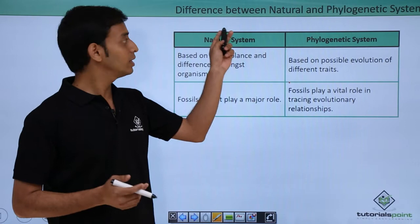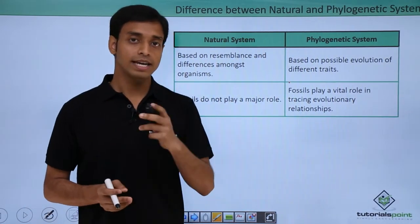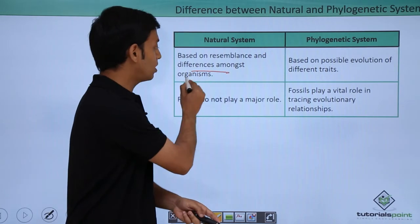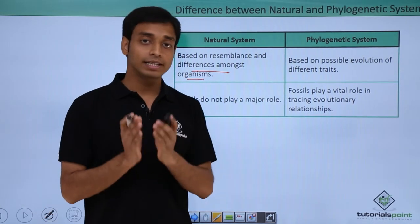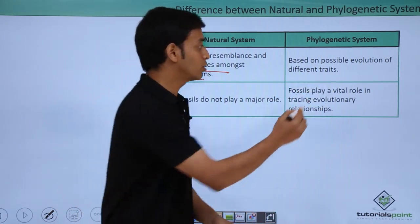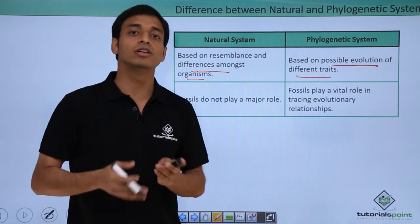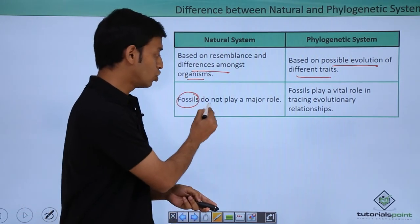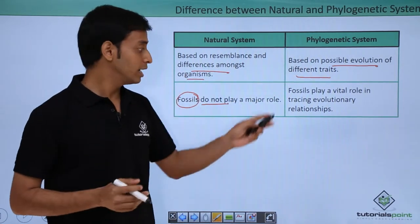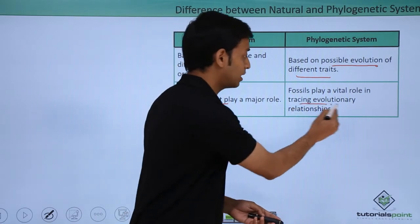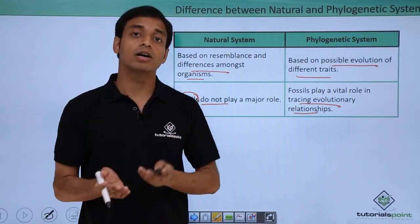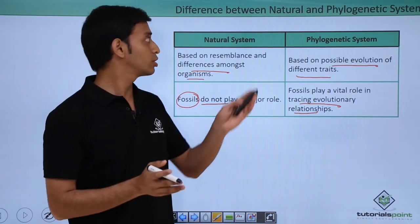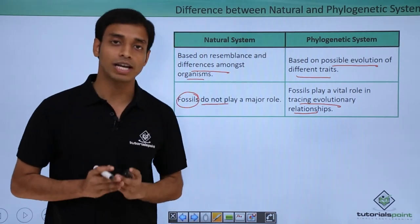The natural system of classification is mostly based on resemblance and differences among organisms, while the phylogenetic system is based on possible evolutionary traits. A very important distinction is that in the natural system, fossils do not play a major role, whereas in the phylogenetic system fossils play a vital role in tracing evolutionary relationships — for example, information about dinosaurs or primitive man is possible only through the phylogenetic system.